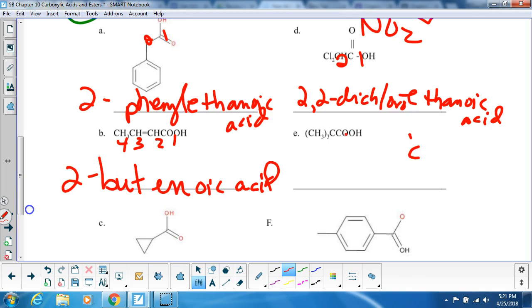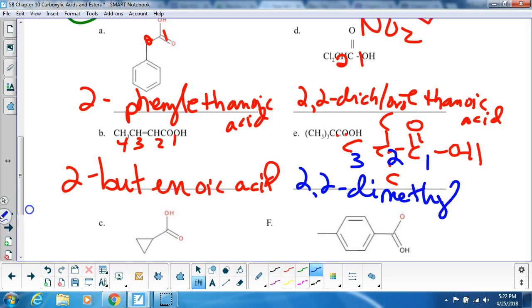so here is this carbon, C double bond O-OH, the one next to it is this one, and what's off of this carbon are three more carbons. You see that? And I drew it out so I knew which one was my longest chain. It's three. So it's 2,2-dimethylpropanoic acid.